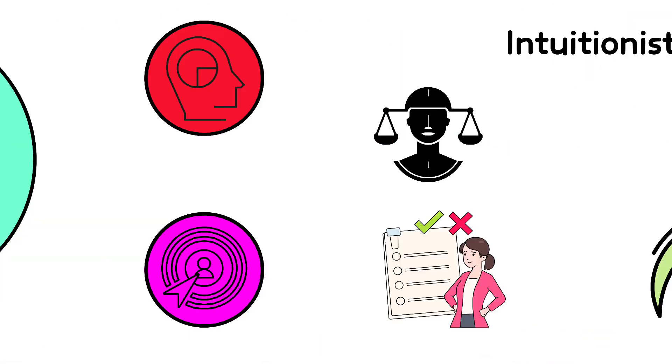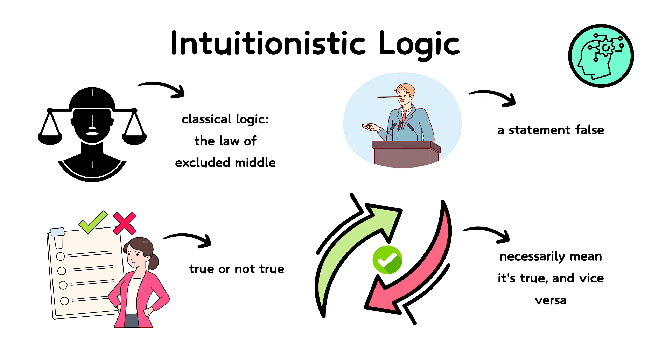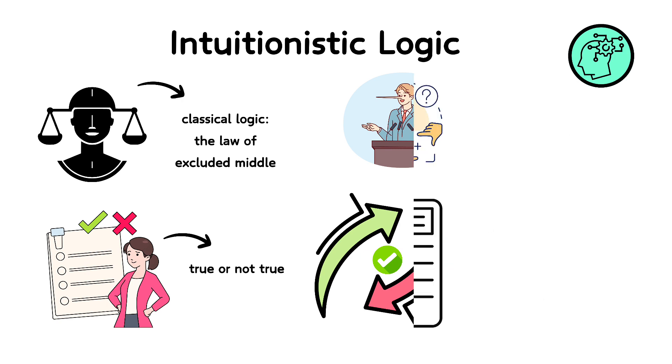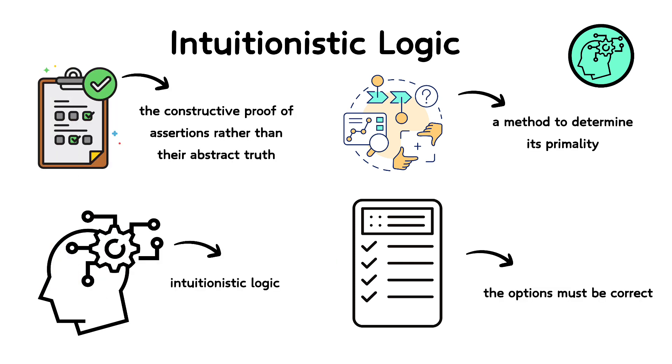Intuitionistic logic challenges a core aspect of classical logic, the law of excluded middle, which states that every proposition is either true or not true. Intuitionists argue that just because we can't prove a statement false doesn't necessarily mean it's true and vice versa. This logic is more concerned with the constructive proof of assertions rather than their abstract truth.